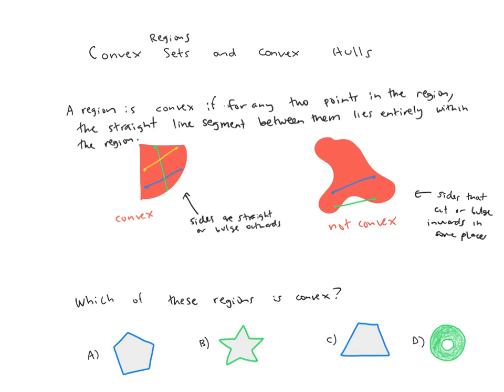You should find that shapes A and C are both convex. But shapes B and D are not convex.